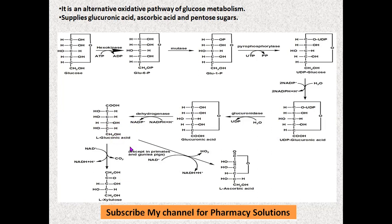L-gluconic acid undergoes dehydrogenation and decarboxylation — CO₂ is removed, and two hydrogens are removed from the third carbon atom. The hydrogen from the terminal carbon is transferred, forming CH₂OH, and a CO group is formed. That's how xylulose is formed. So L-gluconic acid on decarboxylation and dehydrogenation is converted to xylulose.